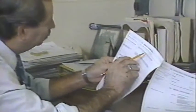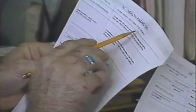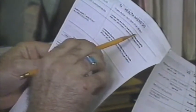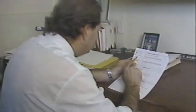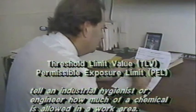Many important terms on labels and material safety data sheets are not everyday ordinary words. Some of them are directed mainly towards specialists, like engineers, firefighters, and industrial hygienists. For example, the words threshold limit value, TLV, or permissible exposure limit, PEL. These values are based on current knowledge about the hazards of the chemical. They tell an industrial hygienist how much of a chemical is allowed in the work area, and they indicate under what conditions a worker can be exposed to it throughout his working life and not be harmed.